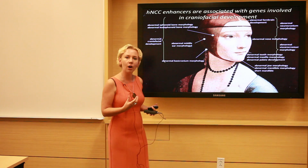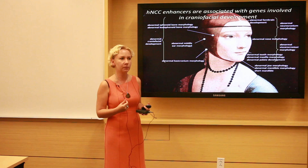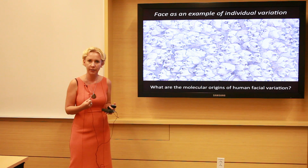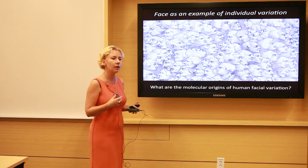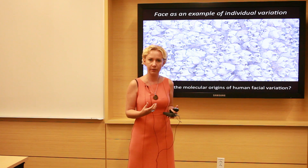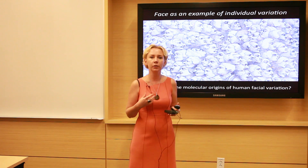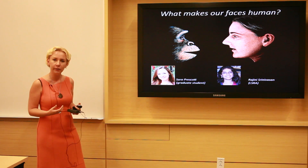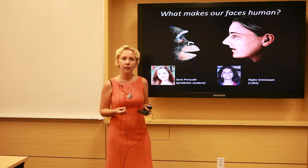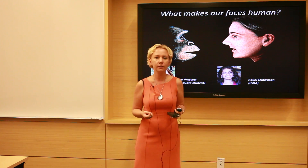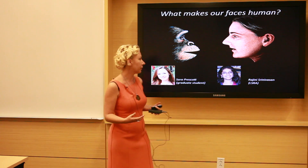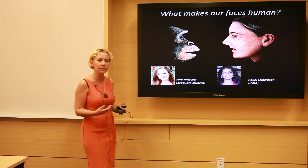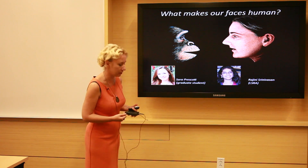Because a lot of variation is regulated at the gene expression level, we are starting to explore the face as an example of individual variation and thinking about how to link genetic variation in regulatory elements with phenotypic variation in craniofacial features. Perhaps more fundamentally, we are also interested in what makes our faces human — how our regulatory elements in the crest or other cell types differ from those of a chimpanzee. People in my lab are also developing a chimpanzee stem cell model to ask these questions experimentally.